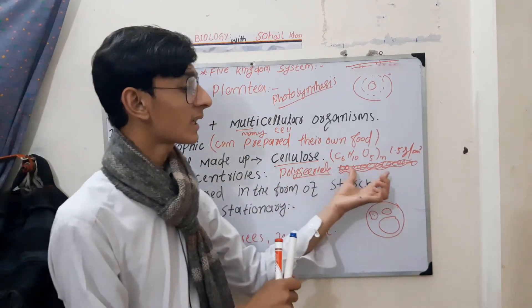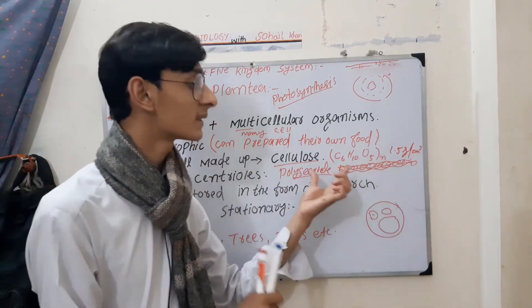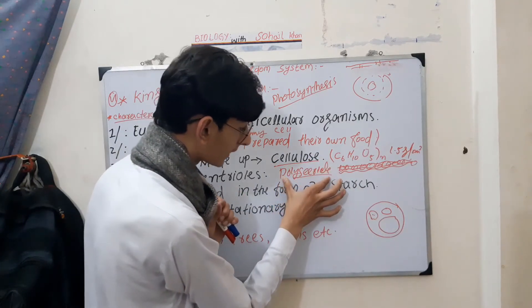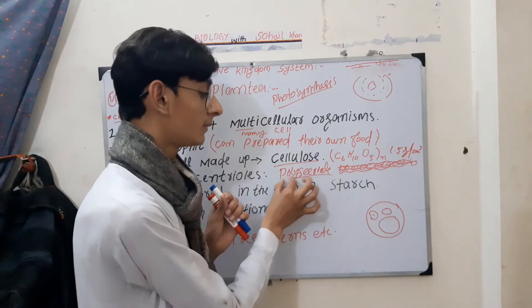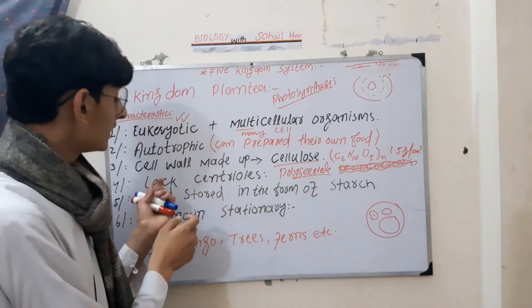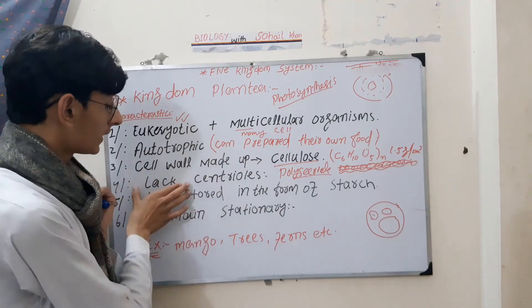Polymer means many units. Cellulose is a polysaccharide made of simple sugars. Then, centrioles are absent in plant cells, not present.